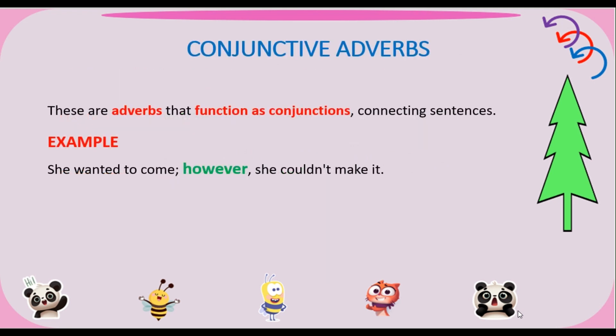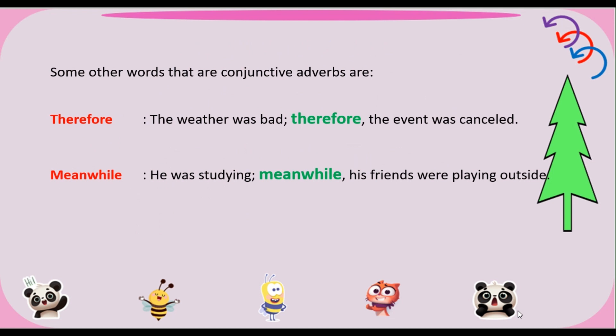The last type of conjunctions is Conjunctive adverbs. These are adverbs that function as conjunctions, connecting sentences. Example: She wanted to come, however, she couldn't make it. Some other conjunctive adverbs: Therefore — the weather was bad, therefore the event was cancelled. Meanwhile — he was studying, meanwhile his friends were playing outside.